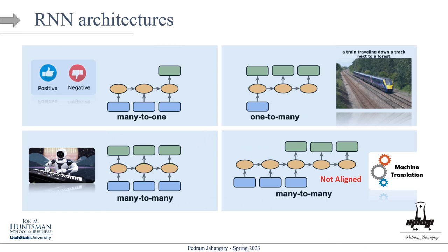Different RNN architectures: Many-to-one — many inputs, output only the last state S_T. Examples: temperature forecasting (120 hours → 1 prediction) or sentiment analysis (movie review sequence → positive/negative classification). One-to-many — one input, multiple outputs. Classic example: image captioning — one input image generates a sequence of text, such as 'a train traveling down a track next to a forest.'